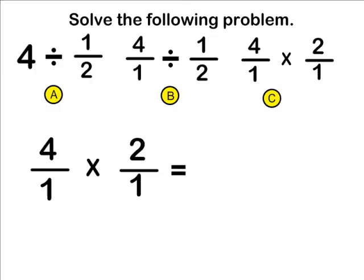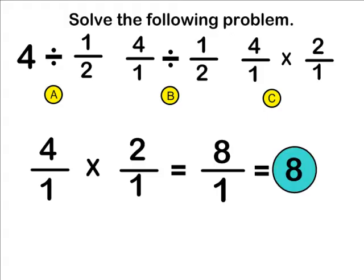When multiplying the numerators together, we get a product of 8. When multiplying the denominators together, we get a product of 1. 8 over 1 can be simplified into 8 wholes. So 4 divided by 1 half is equal to 8.